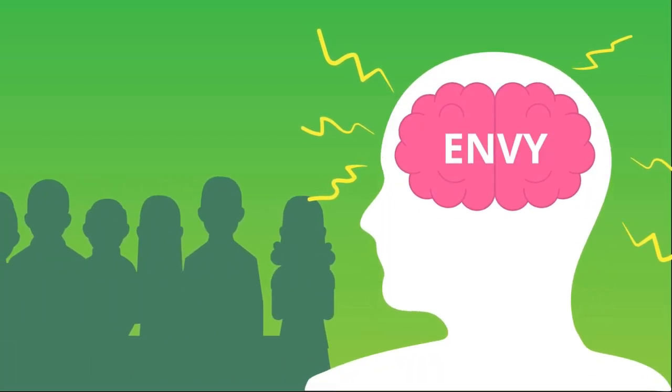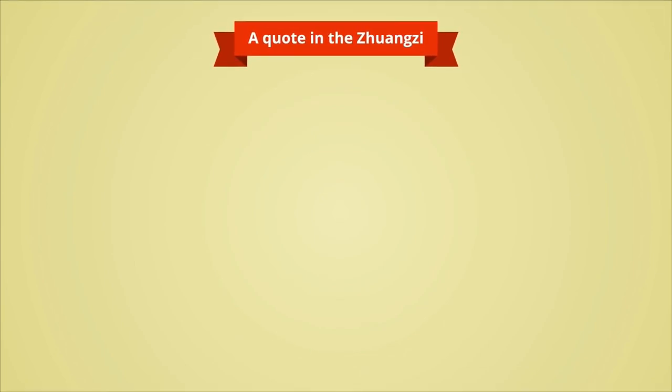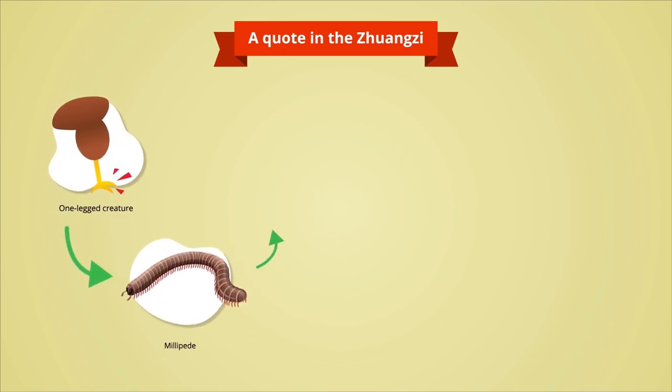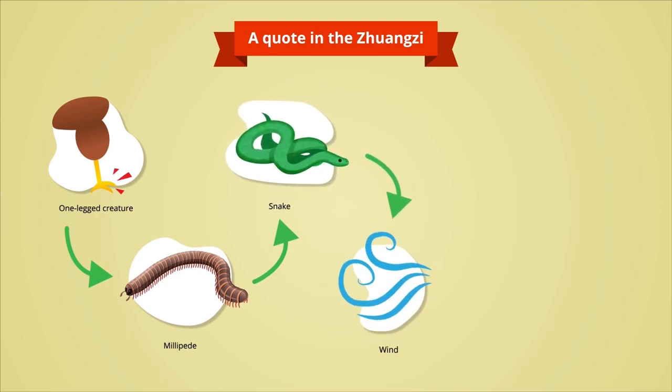Another big flaw in the human mind is trying to be something or someone else. Life has given a person everything they need to survive, but we always end up envying others and trying to be like them. There is a quote in the Zhuangzi, another prominent Taoism literature, and it goes like this: The one-legged creature is envious of the millipede. The millipede is envious of the snake. The snake is envious of the wind. The wind is envious of the eye. The eye is envious of the heart.